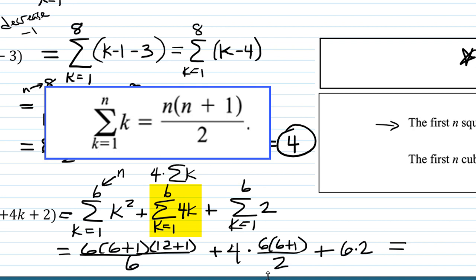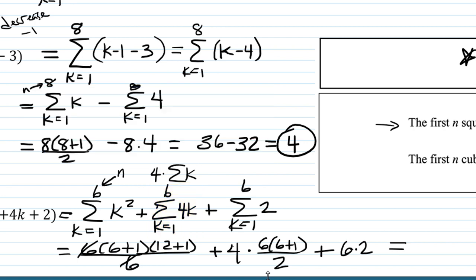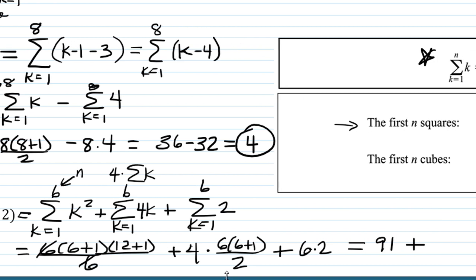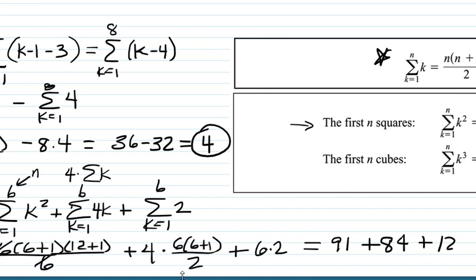So the first term turns out to be the 6s cancel, and we have 7 times 13, which is going to be 91, plus we have 4 times 3 times 7. So 4 times 21 is 84, which we actually got in Part C before, and plus 12, which we got in Part A. And so we're going to have 91 plus 84 is 175, plus 12 is going to be 187.